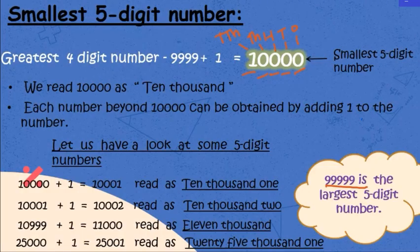Each number beyond 10,000 can be obtained by adding 1 to the previous number. Let us have a look at some 5-digit numbers. If I add 1 to 10,000 we get 10,001. If I add one more, I get 10,002, then 10,003. Similarly, taking 10,999 and adding 1 more gives us 11,000.